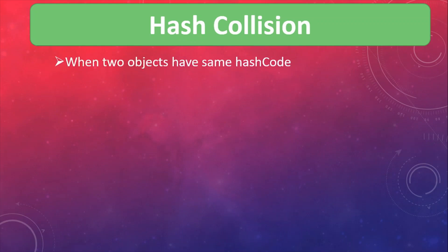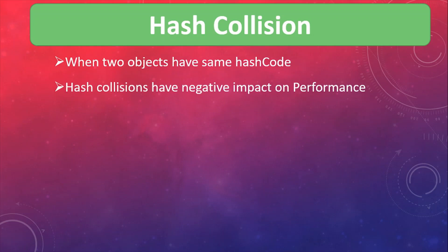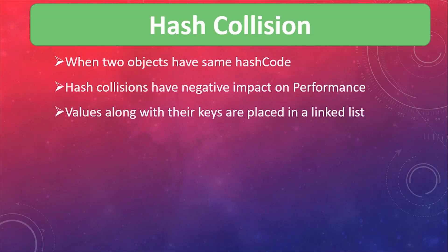Since we have a very limited number of buckets available, it's possible that the index number of two key-value pairs is the same — that situation is known as a hash collision. A hash collision is when two pieces of data in a hash table share the same hash value. Hash collisions have a negative impact on lookup time. When multiple keys end up in the same bucket, the values along with their keys are placed in a linked list.